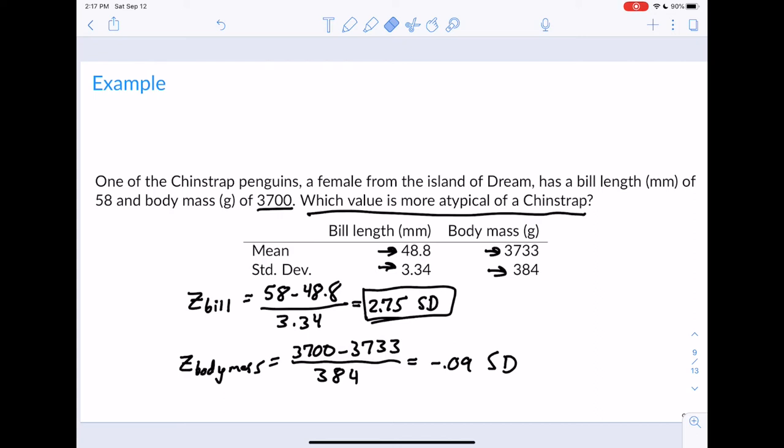This is how we will typically use z-scores. It will allow us to compare values on two different variables. You see how they both had different means and different standard deviations, so we can't readily make that sort of comparison to find out which was more unusual. We need to go through a z-score.